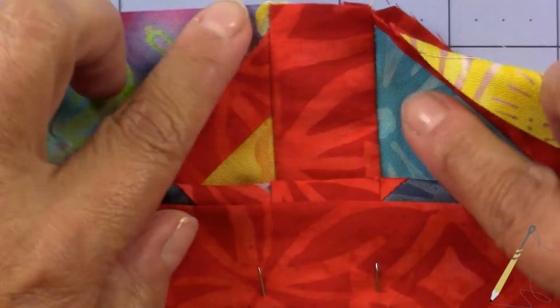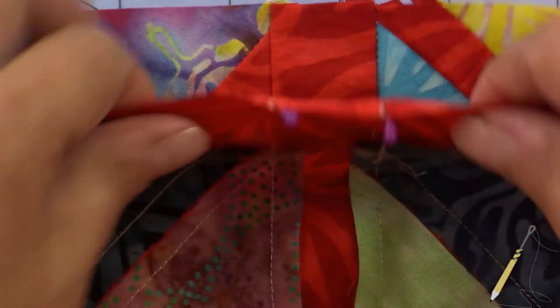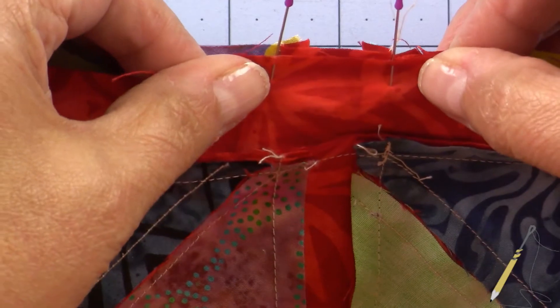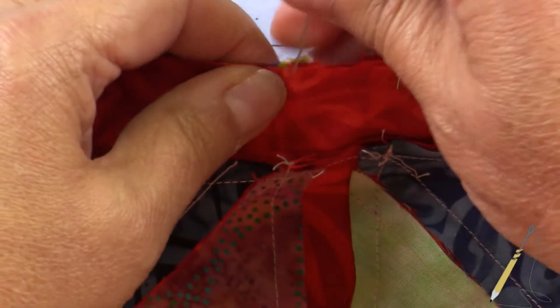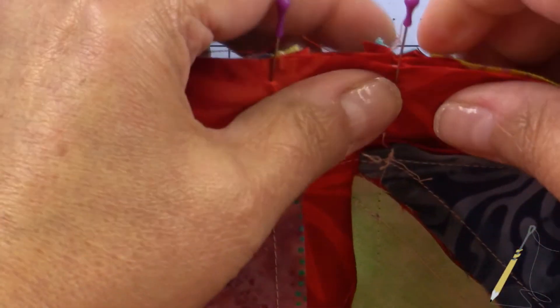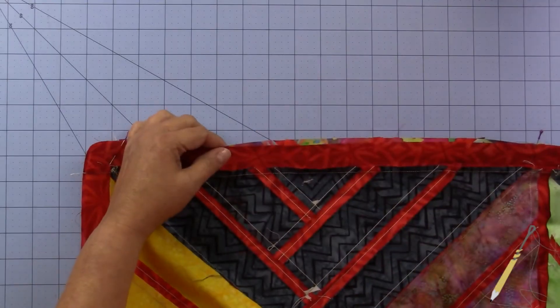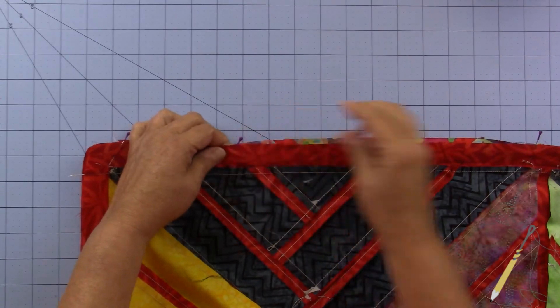And here are the lines we need to line up right here. So I just match the pins with the seam lines and then place the pin in. Then I'm just going to fill in with some pins between the pins we've already placed.